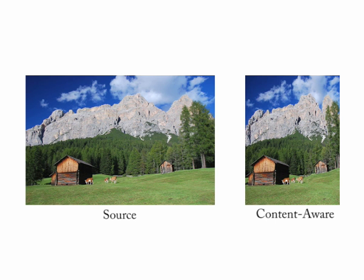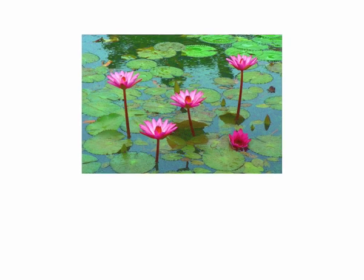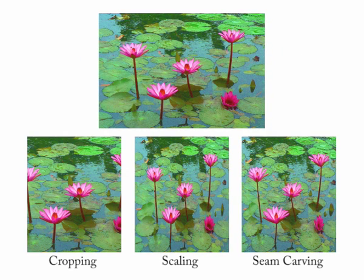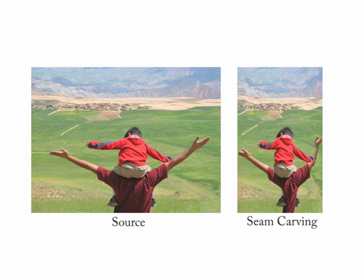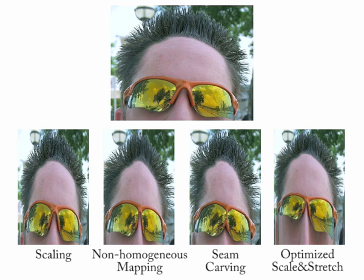In such cases, content-aware operators are likely to yield better results than scaling or cropping, which are oblivious to the media content. Each content-aware method has its strengths and weaknesses, and in some cases serious artifacts are created in the results. How would we know which operator to choose?